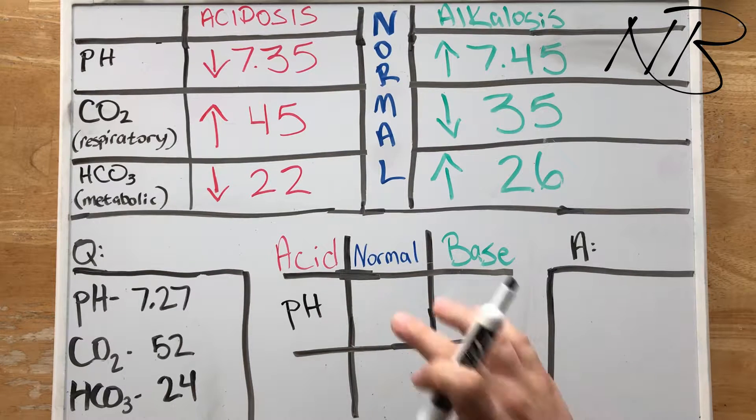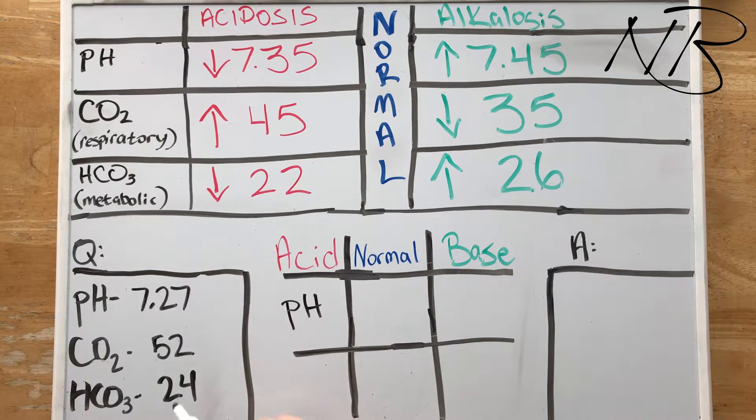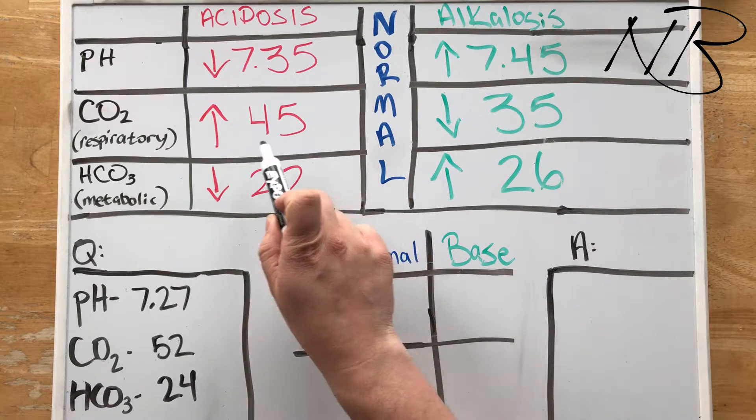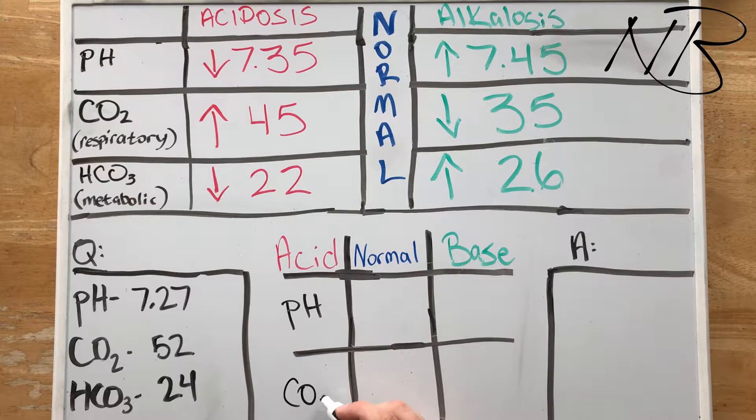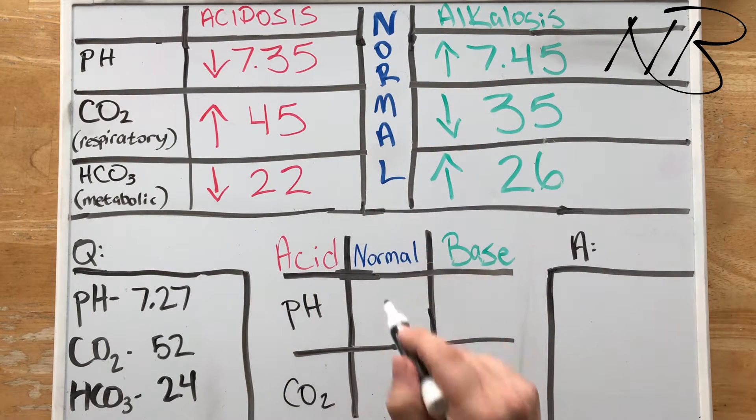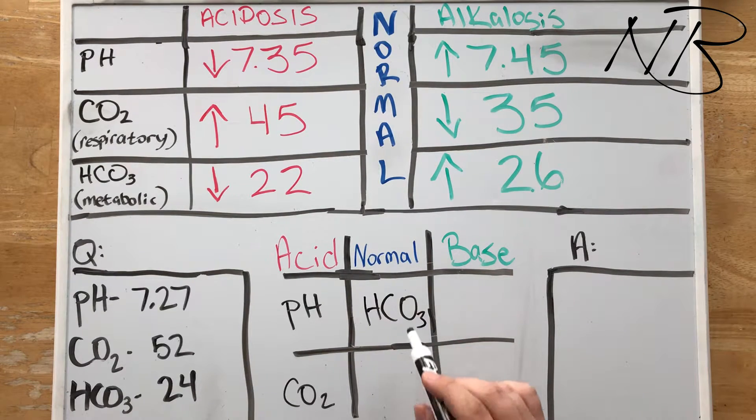Now we already know that our patient is in a state of acidosis. The question then becomes is it respiratory or is it metabolic? Let's just go down the list and take a look at our next value. Our CO2 is 52, our CO2 is greater than 45, therefore it falls in the acid column. And then our bicarbonate is 24, falling right in between that normal range of 22 to 26, so our bicarbonate is normal.